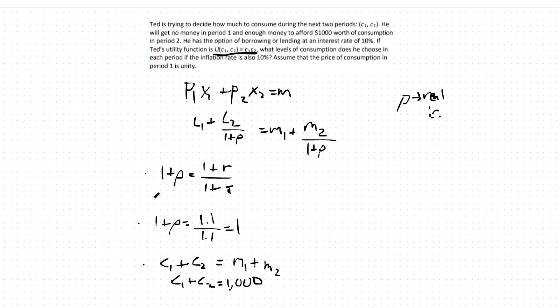Let's now also take a look at our utility function. Let's find our MRS specifically. Our MRS will be the marginal utility of consumption today over our marginal utility of consumption tomorrow. What this ends up being is c2 over c1.